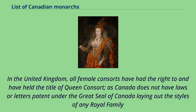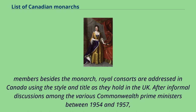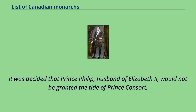In the United Kingdom, all female consorts have had the right to and have held the title of Queen Consort. As Canada does not have laws or letters patent under the Great Seal of Canada laying out the styles of any royal family members besides the monarch, royal consorts are addressed in Canada using the style and title they hold in the UK. After informal discussions among the various Commonwealth Prime Ministers between 1954 and 1957, it was decided that Prince Philip, husband of Elizabeth II, would not be granted the title of Prince Consort.